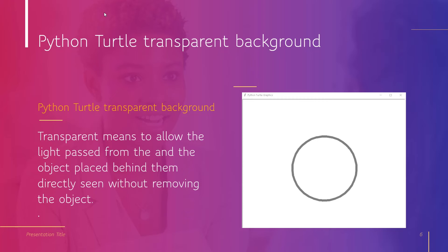Now let's move forward and discuss Python Turtle Transparent Background. Before moving forward, we should have a piece of knowledge about transparency. Transparent means to allow light to pass through, so the objects placed behind are seen directly without removing the object. A transparent background means that the object placed behind the screen is seen directly.